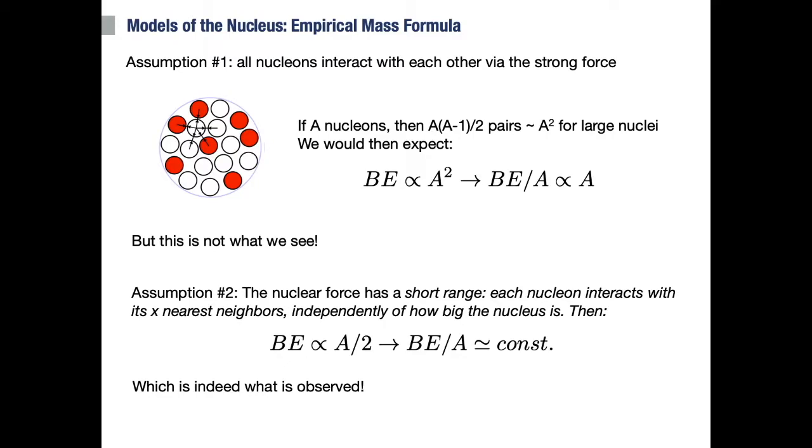Now, if we think about it, this implies that nucleons do not interact with every other nucleon. So if we drop the previous assumption and instead assume that each proton and neutron only interacts with a certain number of particles within a given range, with a fixed number of neighbors independently of how big the nucleus is, then the binding energy would depend linearly on the mass number, and the binding energy per nucleon would be constant.